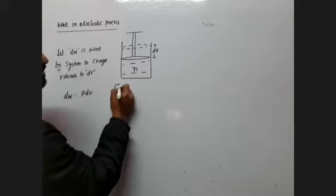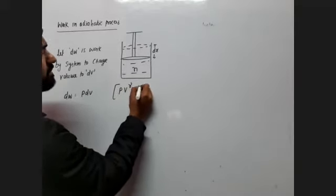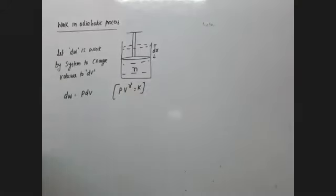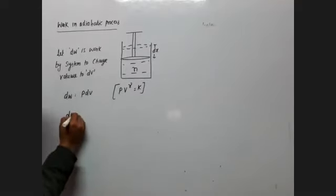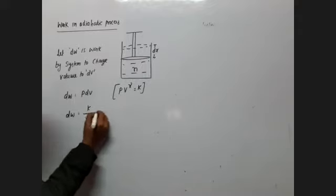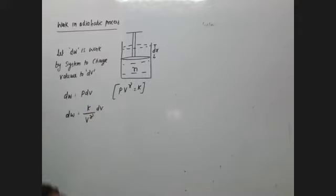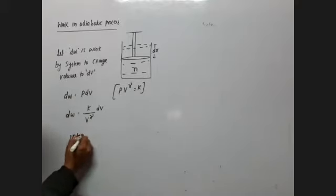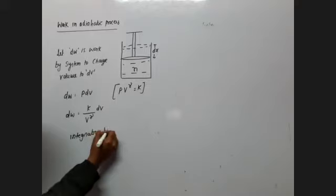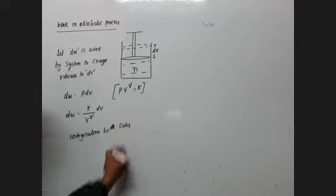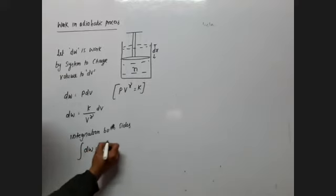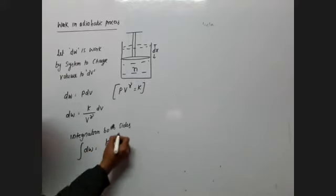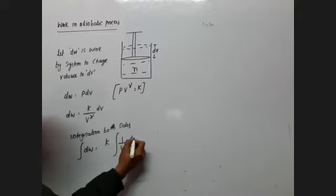For an adiabatic process, PV^γ = constant (K). So p = K / V^γ. Substituting, dW = (K / V^γ) · dV. Now we integrate both sides.